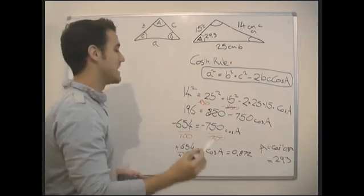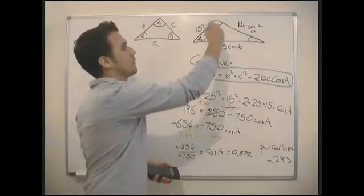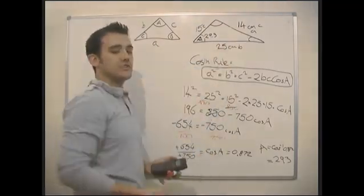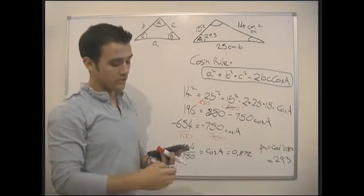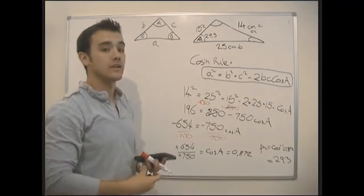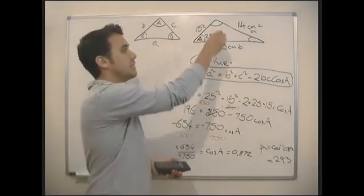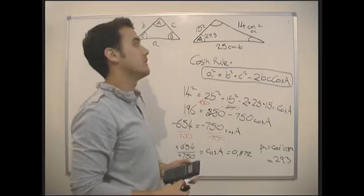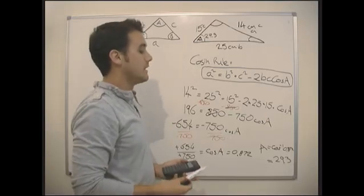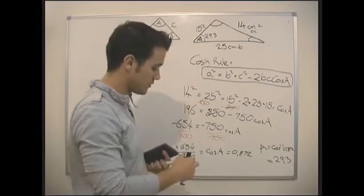And again, now that we've found that angle, we can use the sine rule to find one of the other angles, and then use the fact that angles add up to 180 to find the last one. And that's it — that's the sine and the cosine rule.